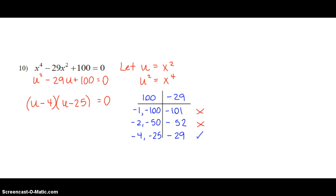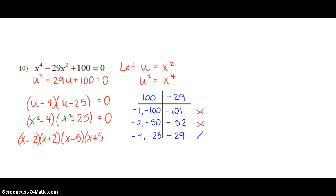That equals zero because we are solving. Now we need to plug back in x squared for u. Once we plug back in x squared instead of u, we see a combination of two different difference of squares, so we need to factor further. On the left side we get x minus 2 times x plus 2, and in the right difference of squares we get x minus 5 times x plus 5, all equal to zero. So our solution set is x equals plus or minus 2 and x equals plus or minus 5.